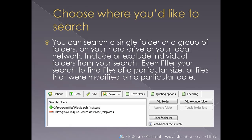Then choose where you'd like to search. You can search a single folder or a group of folders on your hard drive or your local network. Include or exclude individual folders from your search, and even filter your search to find files of a particular size or files that were modified on a particular date.